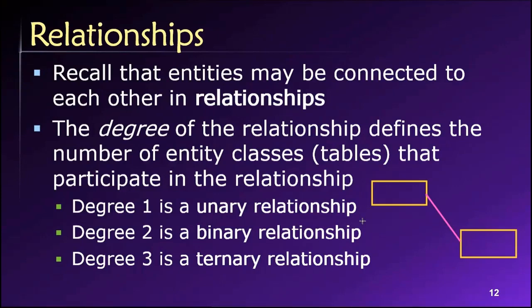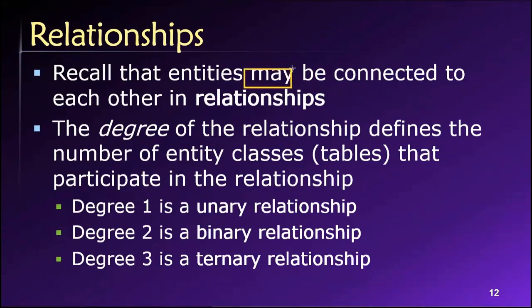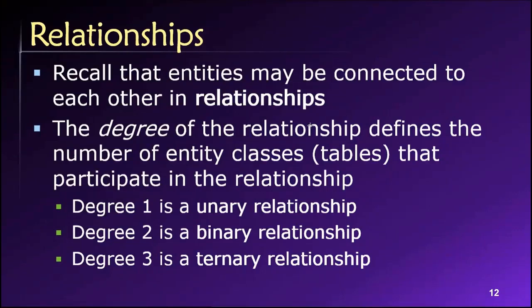In entity relationship modeling, we have visual tools that we can use to express much more detail about the nature of the relationship between two tables than we have encountered thus far in our class. Entities may be connected to other entities — remember, this is optional. There's no requirement that every entity be related to at least one other. So they may be connected to others in relationships, depicted using lines on a very basic level.